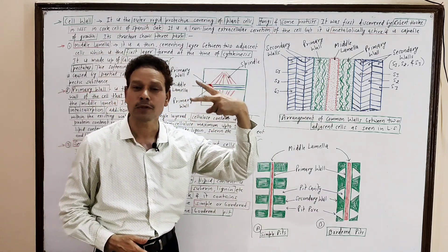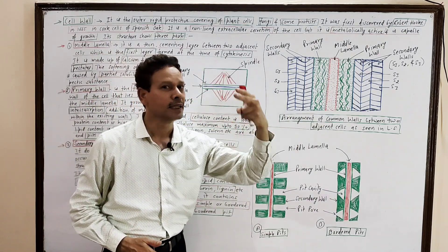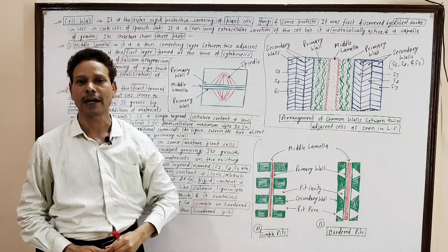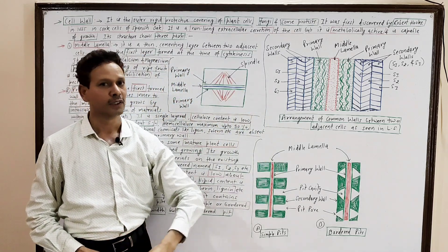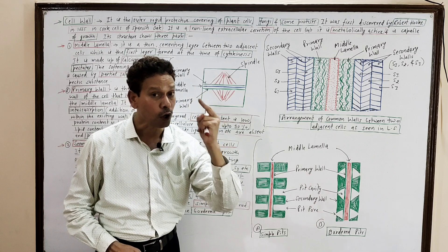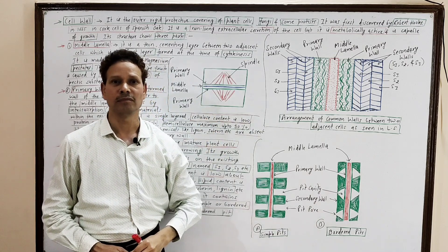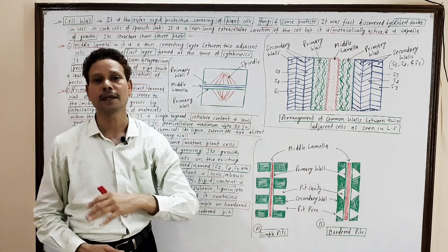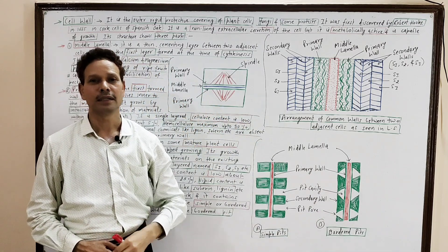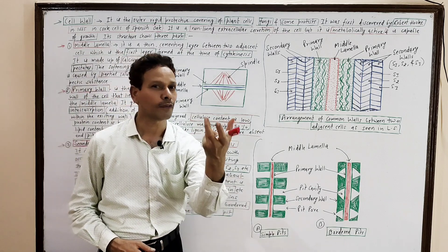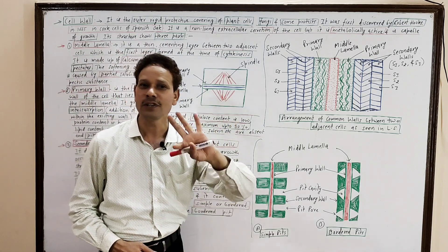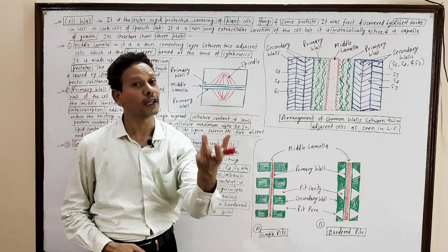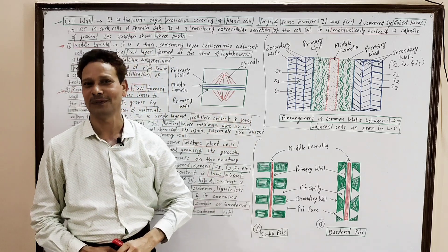This middle lamella — note down for competitive exam students — it is made up of calcium and magnesium pectates. And its solubilization: the solubilization of pectate substance at the time of ripening of fruits into a jelly substance causes softening of fruits.